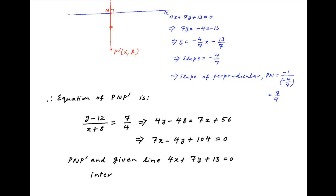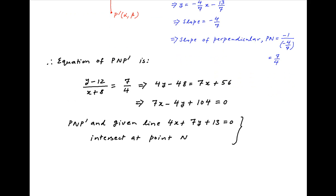Now, P and P' — the perpendicular and the given line — intersect at point N. Therefore, the coordinates of point N can be obtained by solving the equation of the perpendicular 7x - 4y + 104 = 0 and the given line 4x + 7y + 13 = 0 for x and y.